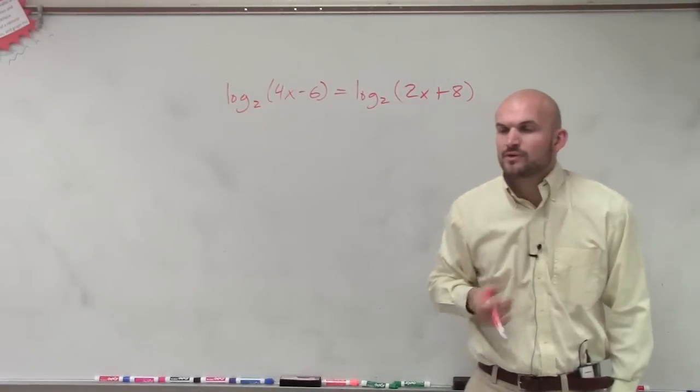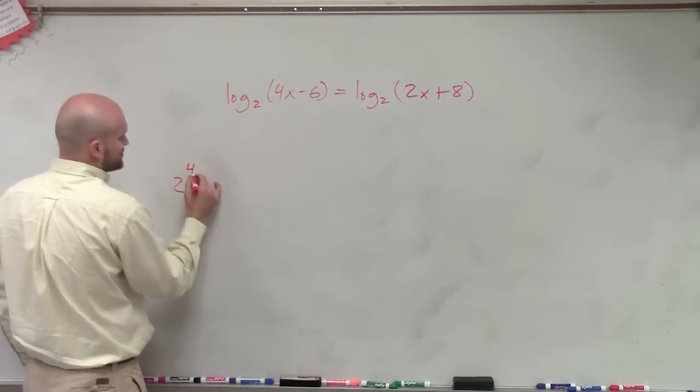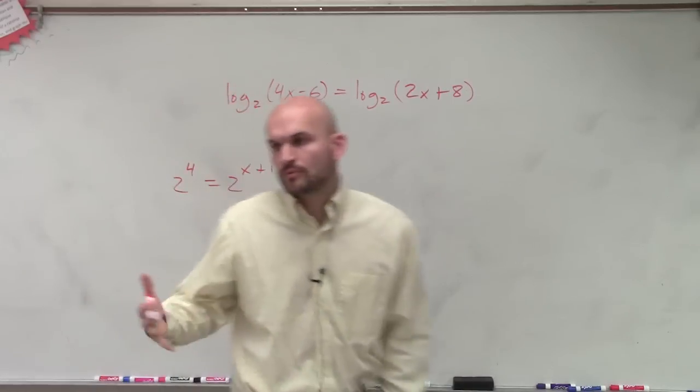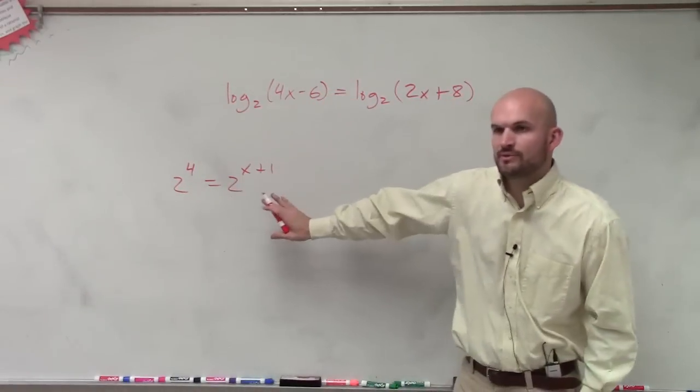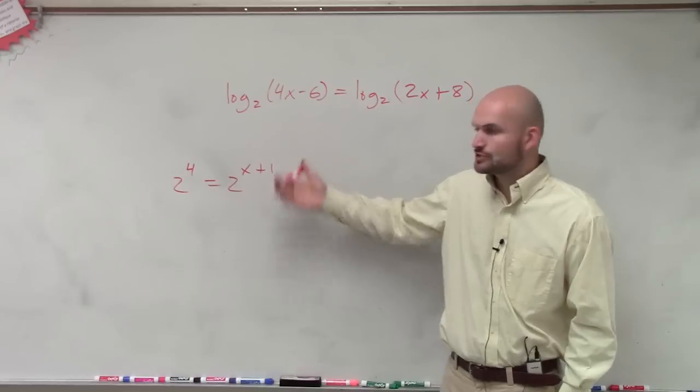So the main important thing that I want to look at, if you remember this, 2 to the 4th equals 2 to the x plus 1. When we had this equality, what did we know that we could do? When we say 2 to the 4th power equals 2 to the x plus 1.